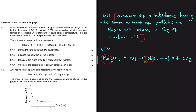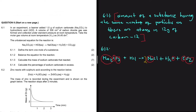Moving from Na to carbon: on the left-hand side we have one carbon atom, and on the right-hand side we also have one carbon atom, so carbon is already balanced. For oxygen, we have three oxygen atoms on the left, and on the right we have one plus two — also three. So oxygen is balanced.